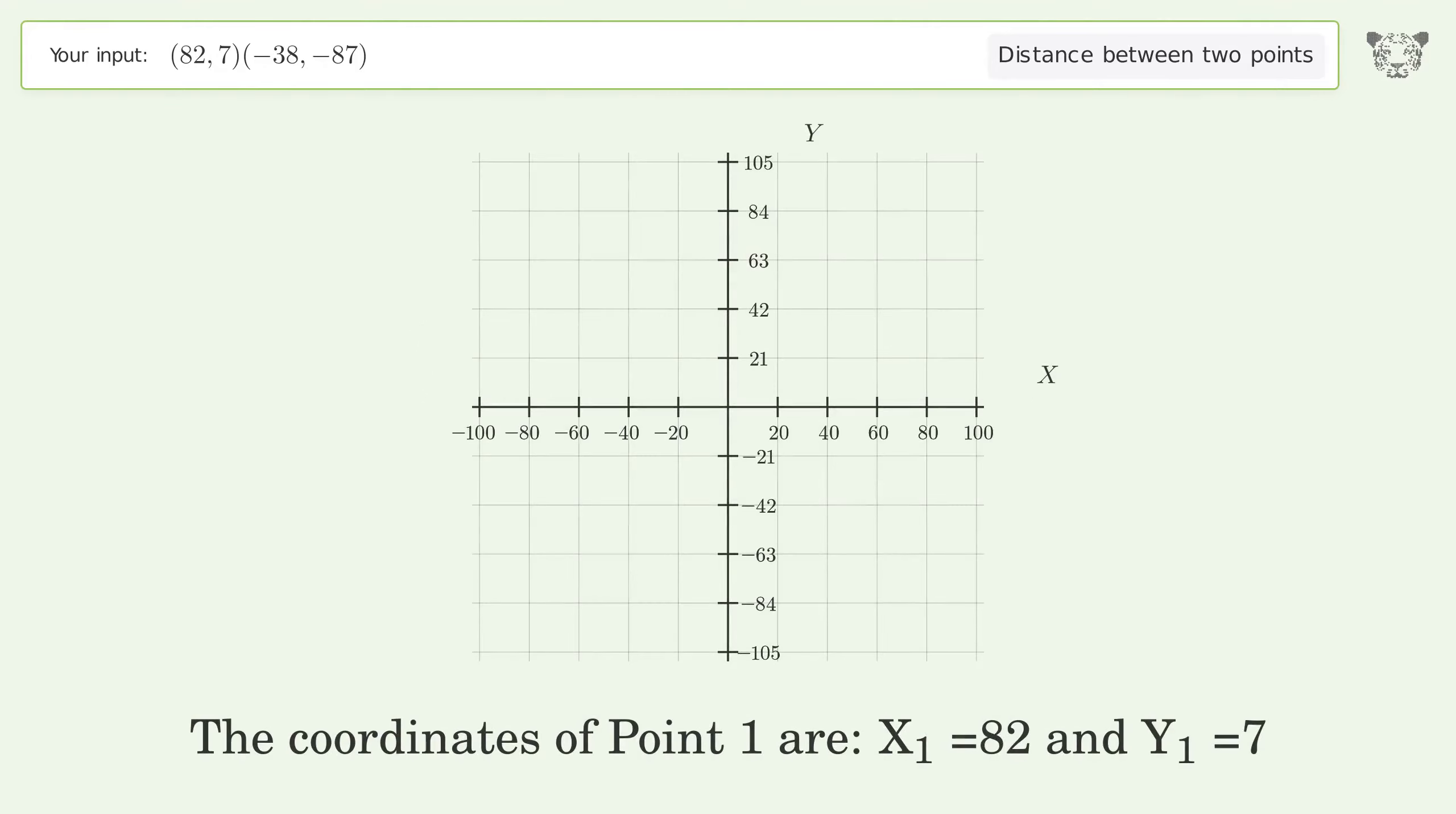The coordinates of Point 1 are x1 equals 82 and y1 equals 7. The coordinates of Point 2 are x2 equals negative 38 and y2 equals negative 87.